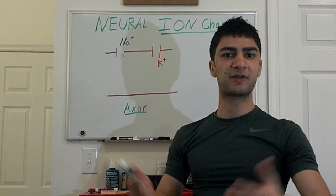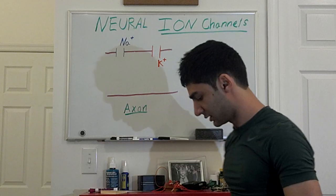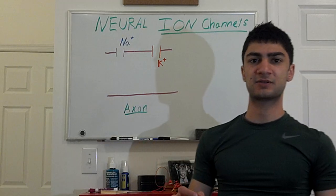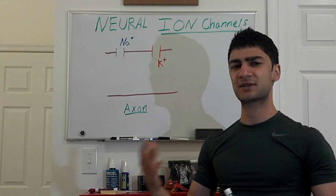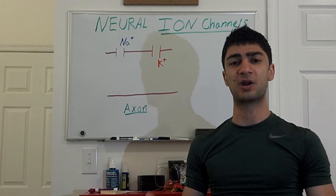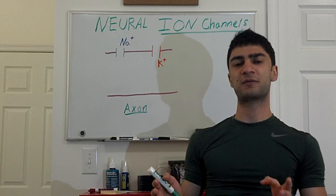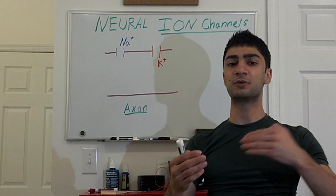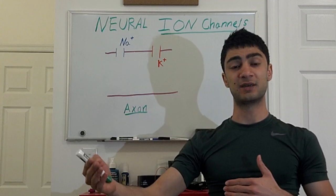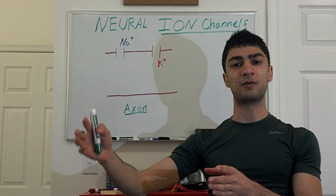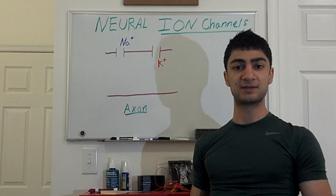Hey guys, some of you asked me to talk about ion channels, so that's what I'm going to focus on today. These ion channels are going to be specific to the neural axon — this is how an action potential is initiated and propagated through the axon. For now we're just going to focus on the molecular mechanism of sodium flowing into the cell and potassium flowing out, and how that flow creates and propagates the action potential down the axon.